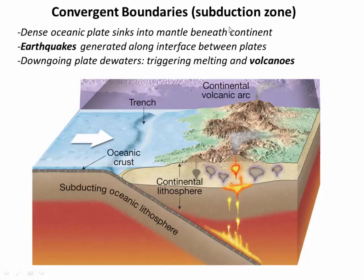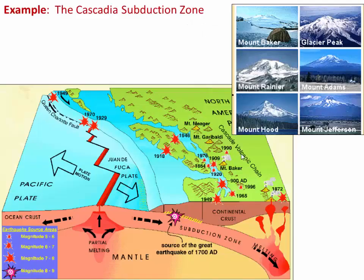A major type of convergent boundary is a subduction zone. The old, oceanic lithosphere is quite dense, so it's sinking into the mantle, often beneath a continent, but not always. This generates earthquakes as these two plates slide past each other on what is effectively a thrust fault. And it also causes melting — as water is driven off of the downgoing plate, it causes the overlying rocks to melt. That magma makes its way up, fueling volcanoes, of which we see many around the rim of the Pacific Ocean. For example, the Cascadia subduction zone in the northwestern U.S. is a famous volcanic arc above a subduction zone.